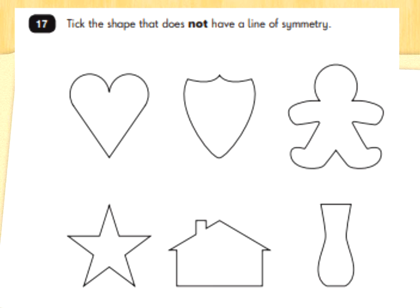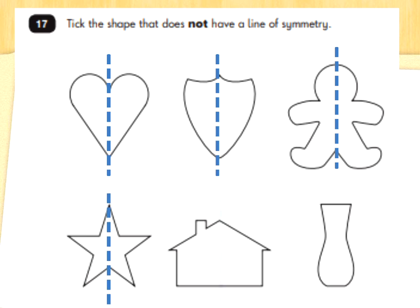Tick the shape that does not have a line of symmetry. Symmetry means if we put a mirror down the middle we would see the same shape on both sides — it would be symmetrical, the same on both sides. Let's draw lines down each shape and see which one would not be the same on both sides. Can you see the one that does not look the same on both sides? It's the house, because the house has a chimney on one side and does not have a chimney on the other side — they are not the same.